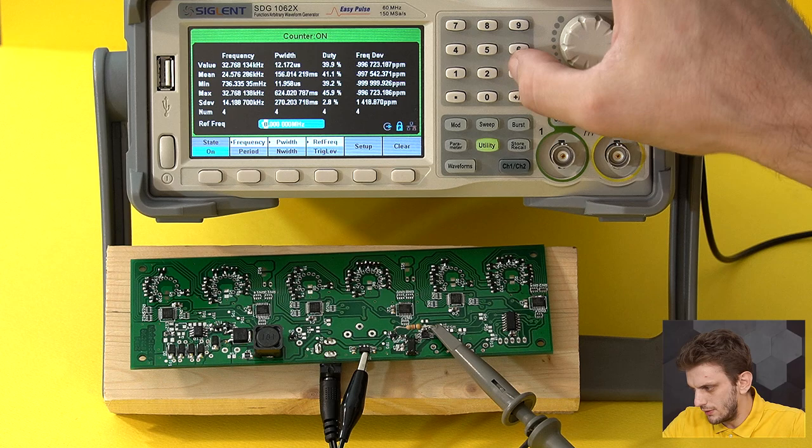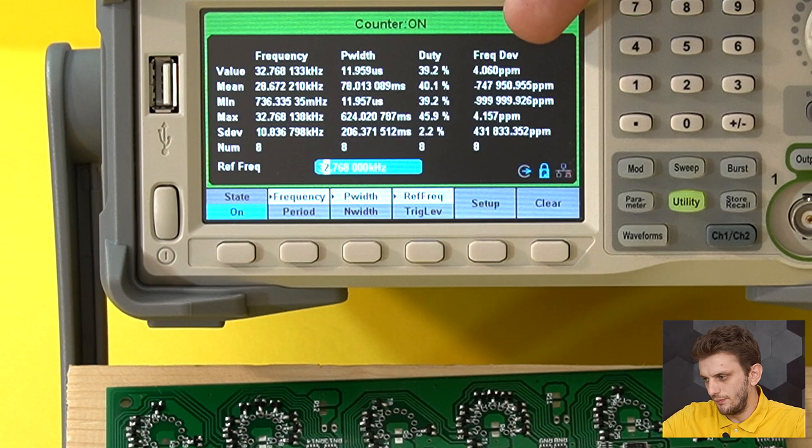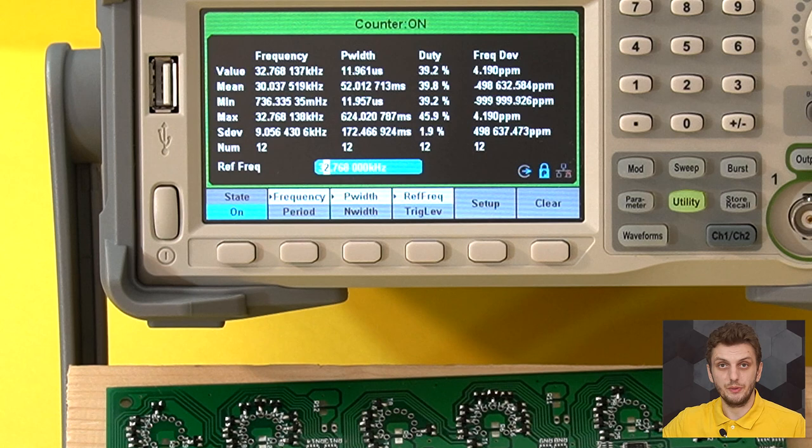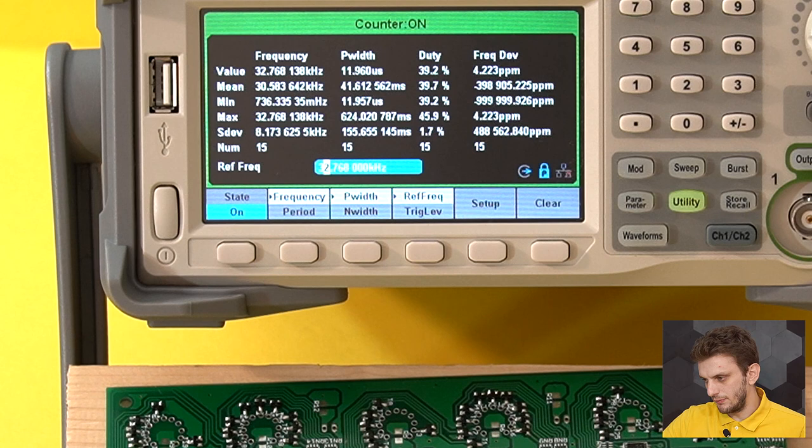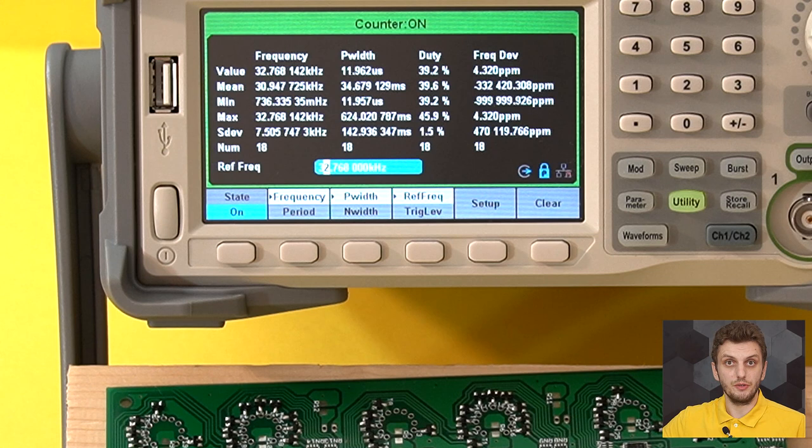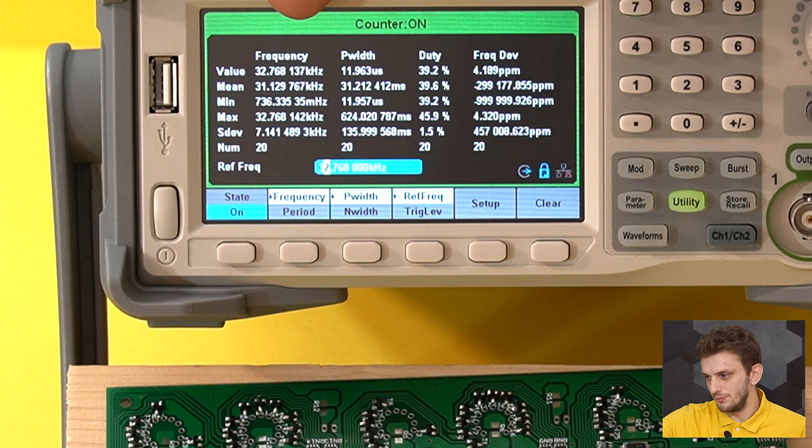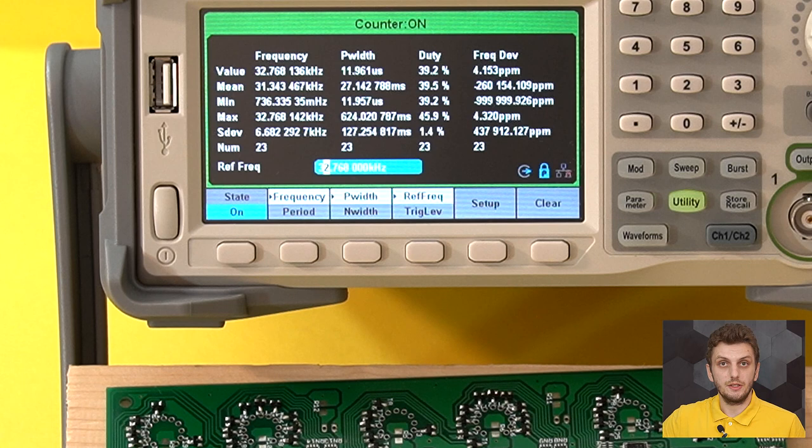While this device will already give us our deviation, it will not just measure the frequency but also compare it to what frequency we're expecting and tell us just how close we are. We can see that with my current setup we're roughly 4.2 parts per million away from what we're expecting to measure, and we're running at a frequency of 32.768138 kilohertz. So the oscillator is working quite nicely.